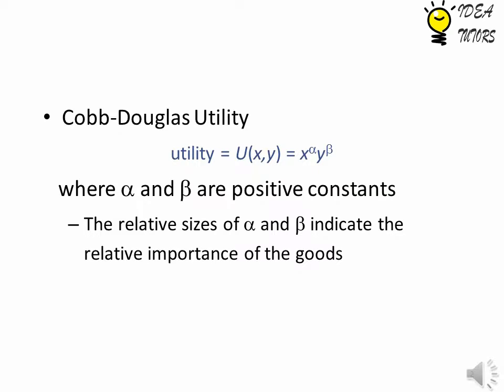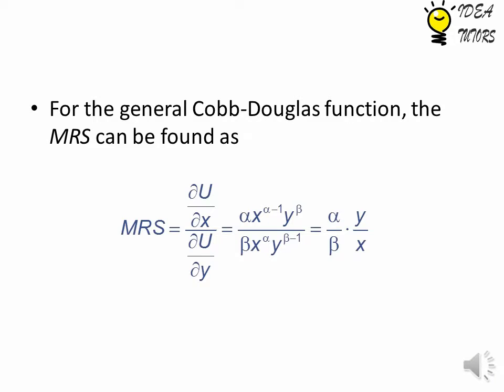The Cobb-Douglas utility function is x to the power alpha times y to the power beta, where alpha and beta are positive constants. The relative sizes of alpha and beta indicate the relative importance of the goods. If alpha is greater than beta, x is more important, and if beta is greater than alpha, y is more important for the general Cobb-Douglas function.